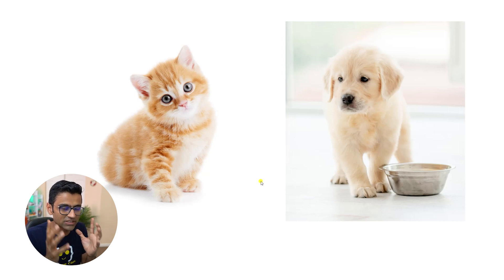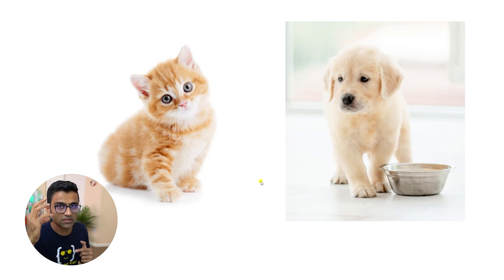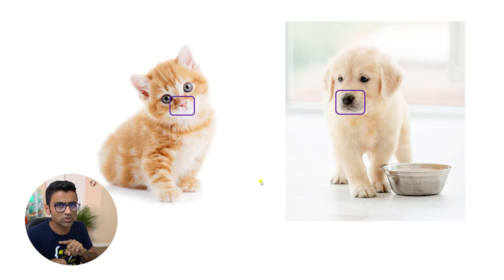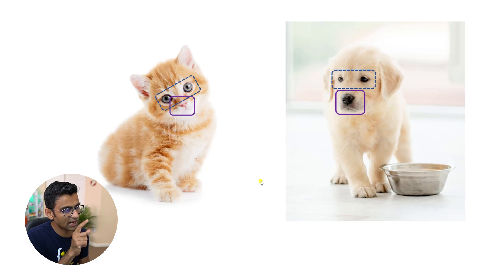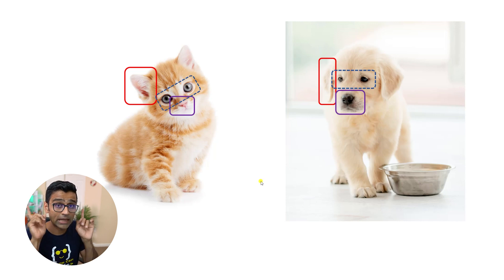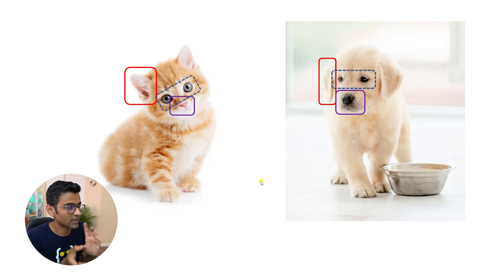You do feature detection in your brain. You don't consciously realize it, but your brain has neurons, and these units try to detect different features. For example, the nose — you look at the nose and try to identify: is it a cat's nose, a dog's nose, or a human nose? Similar with eyes — cat's eyes are round, dog's eyes are a little different. Especially ears: as you can see in the diagram, dogs have ears that kind of fall down, while cats have pointed ears. So ears can also help you determine whether it's a cat or a dog.